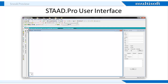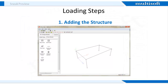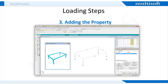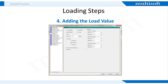On the screen you can see the STAD Pro software. In the following slide we will learn how to apply load to a structure that you are designing. We start with adding structure to the building we want to create — there are five methods to do this that we will learn in the actual training. The method shown on the screen is the run structure wizard. The second step is to add support to the structure. Next, we add properties such as circular, rectangular, trapezoidal, and T-section. The last step is to add the load as per your requirement. All these steps will be taught in detail in the actual training.